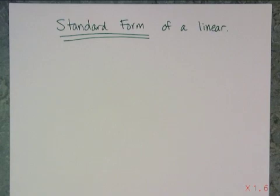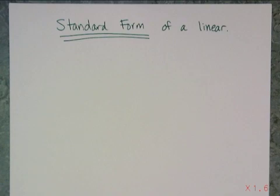It's called standard form because every single line, no matter whether it's a function or not, no matter how many dimensions you have of your linear relationship, you can write it in standard form. You can't always write it in point-slope, you can't always write it in slope-intercept, but you can totally write it in standard form.